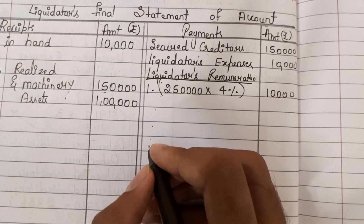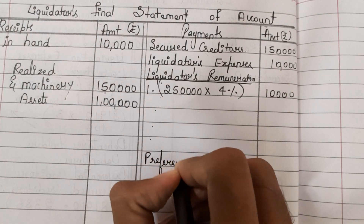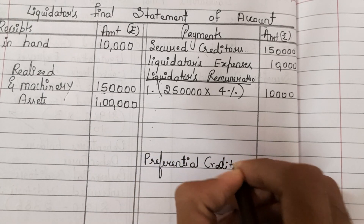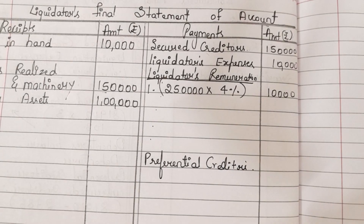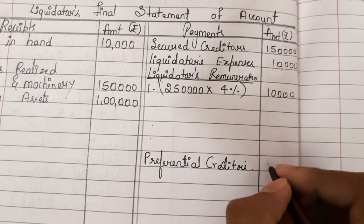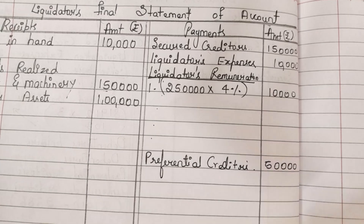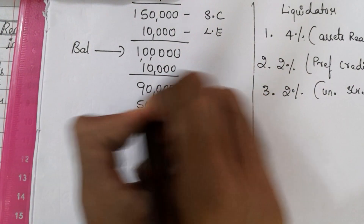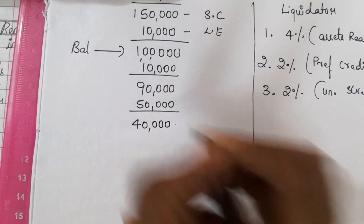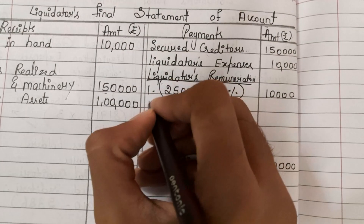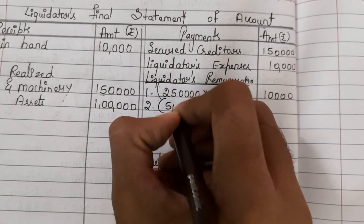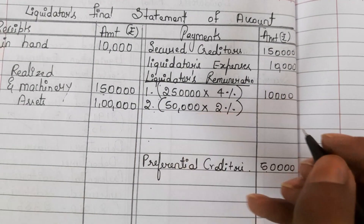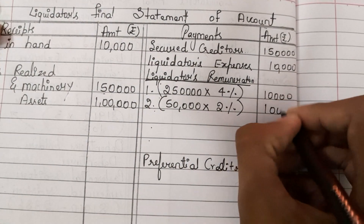No debentures are there, so we go directly to preferential creditors. The preferential creditors amount is ₹50,000, so we pay them ₹50,000. From the ₹90,000 balance, after paying ₹50,000 to preferential creditors, ₹40,000 remains. The liquidator's 2% remuneration on ₹50,000 is ₹1,000, leaving ₹39,000.